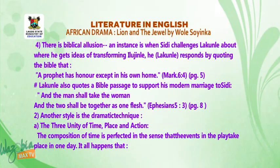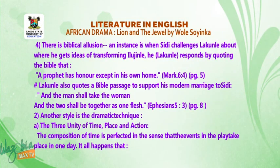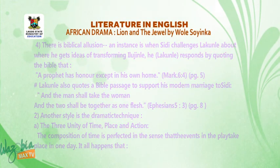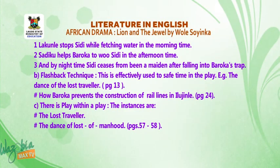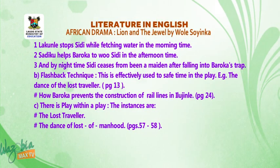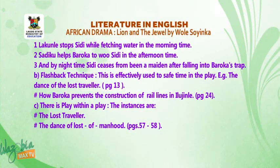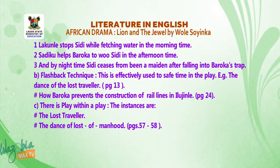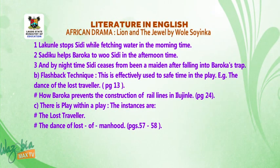Another style is dramatic technique. Number one, the three unities of time, place, and action. The unity of time is seen in that the whole incidents in the play take place in one day: Lakunle stops Sidi while she is fetching water in the morning; Sadiku helps Baroka woo Sidi in the afternoon; and by nighttime, Sidi ceases to be a maiden after falling into Baroka's trap. Another dramatic technique is flashback, effectively used to save time in the play — for example, the Dance of the Lost Traveller, and how Baroka fails to allow a structural rail line through Ilujinle. Another dramatic device is the play within a play — instances are the lost traveller play and the dance of the loss of manhood.